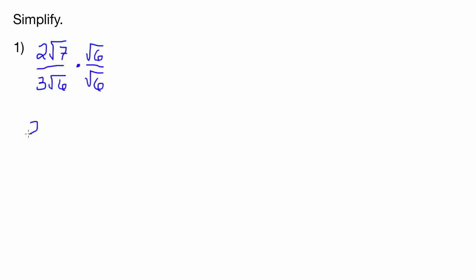So again, 2 will stay the way it is. And then the √7 times the √6 is just going to be √42. And then the 3 stays the way it is. And then the square root of 6 times the square root of 6 is 6.